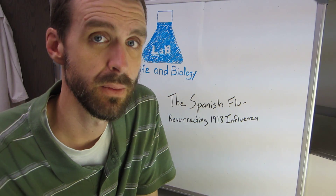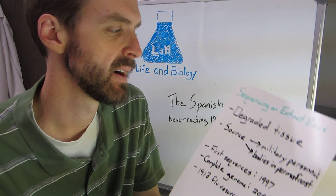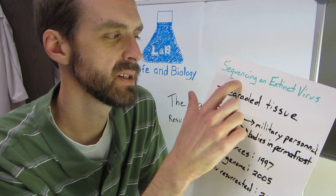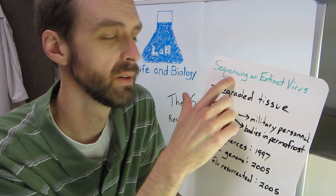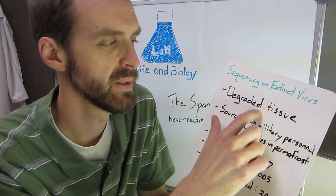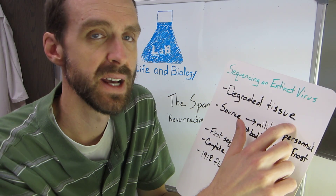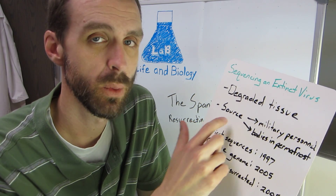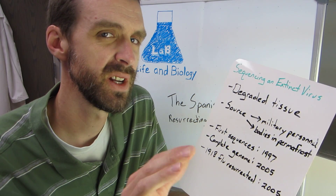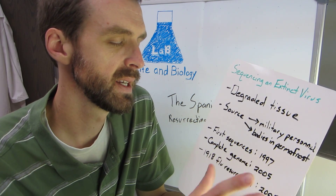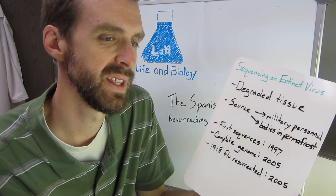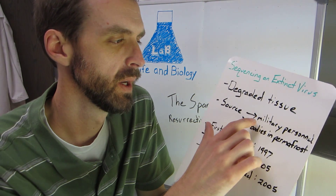So how do you resurrect an extinct virus? Well, the first thing you need is to get sequences of the virus. Much of the tissue from that time has been degraded; however, they were able to find a couple of sources where the tissue was good enough to get bits and fragments of the genome and then stitch that together.